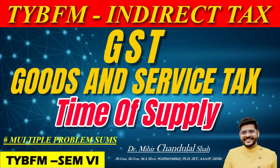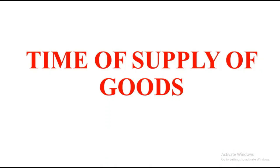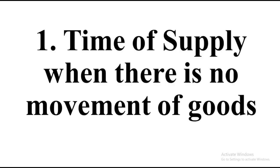All TYBFM students, see that you go through this video very carefully. The name of the chapter is Time of Supply. Under time of supply we have two parts: one is time of supply of goods and second is time of supply of services. We are going to start with the very first part — time of supply of goods. Under this there are multiple types of sums that can come, so we are going to start with the very first type.